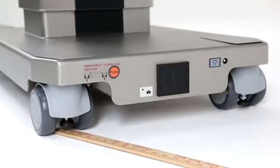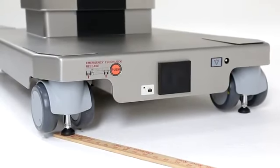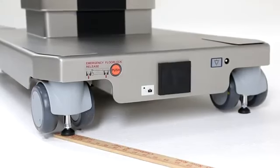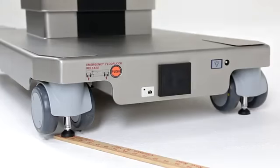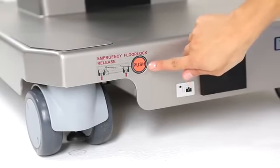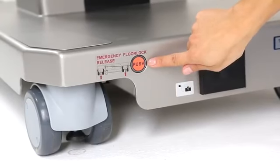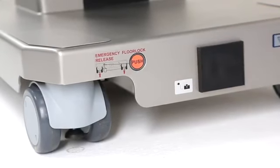Powered posts lock the table into place while compensating for any deviations in the floor of up to 0.4 inches. This advanced stability technology automatically levels the table, ensuring a stable platform. To enhance safety, Trumpf built in an emergency floor lock release to give users peace of mind, knowing the table can be quickly and safely released and moved in urgent situations.